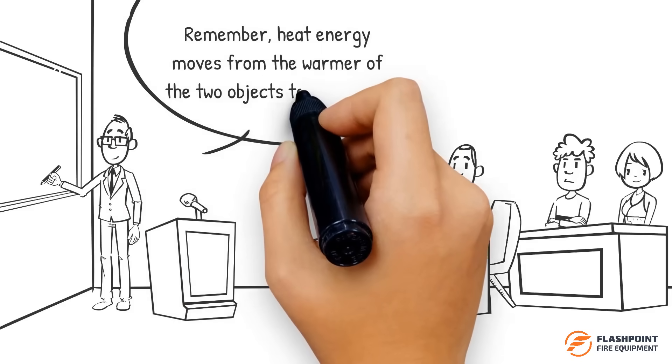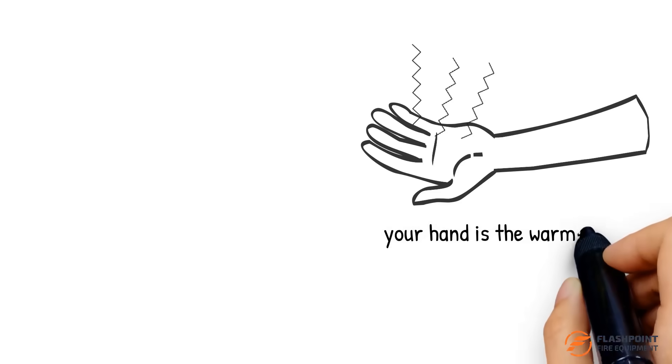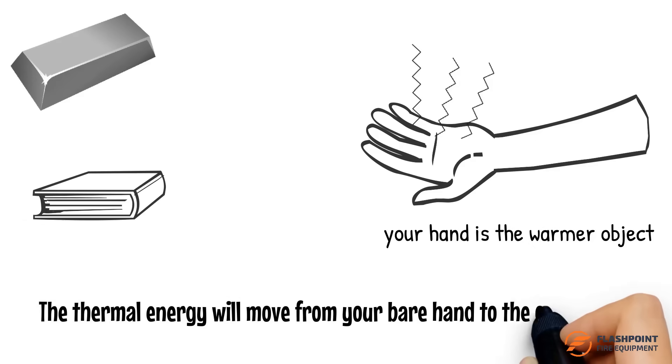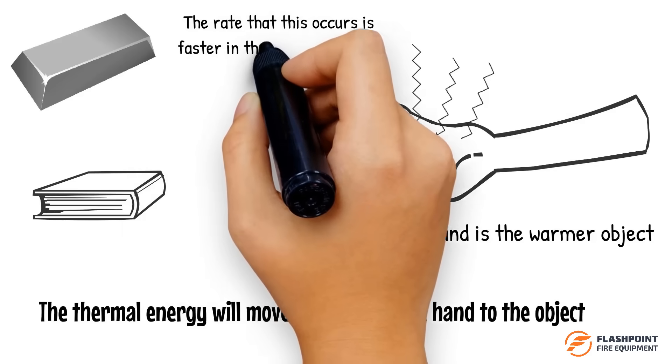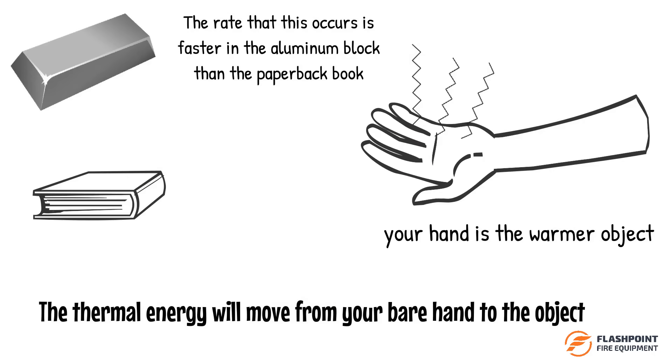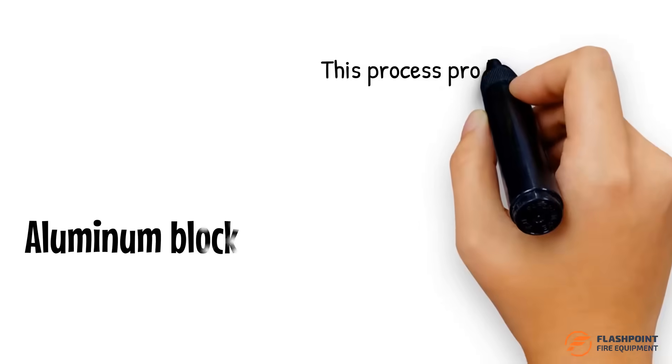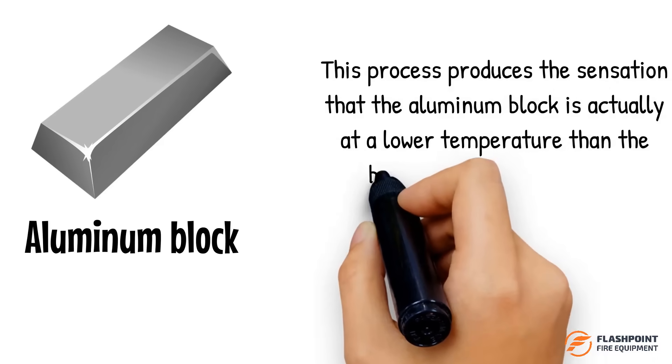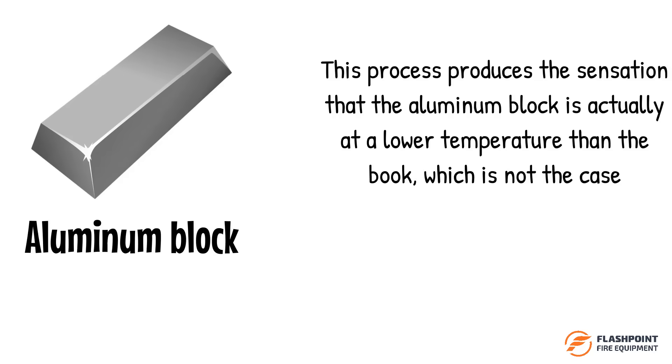Remember, heat energy moves from the warmer of the two objects to the cooler. In both of these cases, your hand is the warmer object in comparison to the aluminum block and the paperback book. The thermal energy will move from your bare hand to the object. The rate that this occurs is faster in the aluminum block than the paperback book.